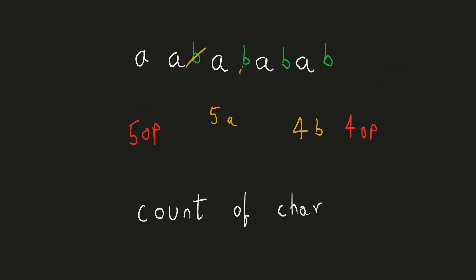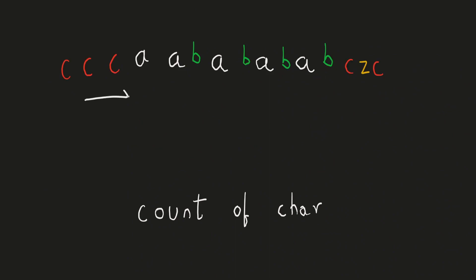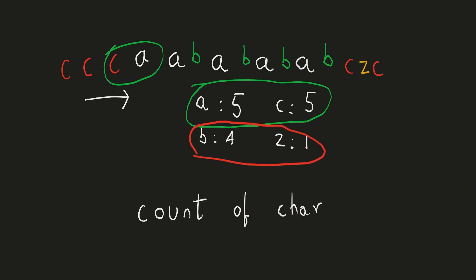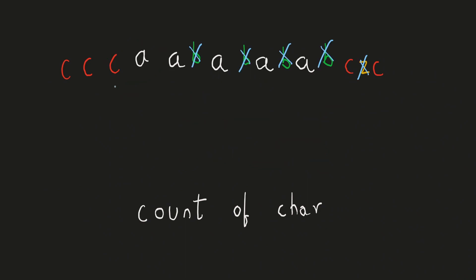Note that this is true irrespective of the positions of the characters. Hence we can go through the array, count the frequency of each character, and whichever characters have the maximum frequency, they can only be part of the final answer. In this case both C and A have a frequency of 5, so they will survive until the final operation, while B and Z have a lower frequency and will be completely eliminated. Let's figure out what the arrangement of the string will be just before it becomes empty.